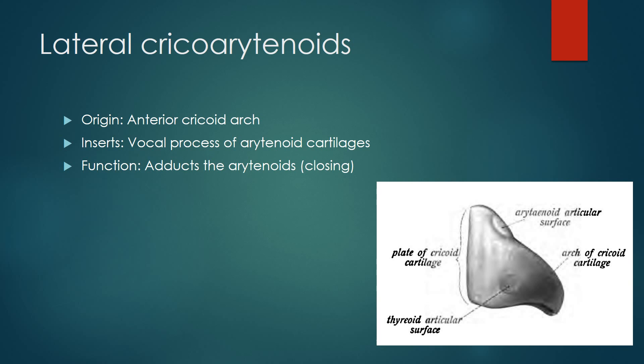The lateral cricoarytenoids originate from the anterior cricoid arch and insert on the vocal process of the arytenoid cartilages. They function as adductors of the arytenoids, closing the rima glottidis.